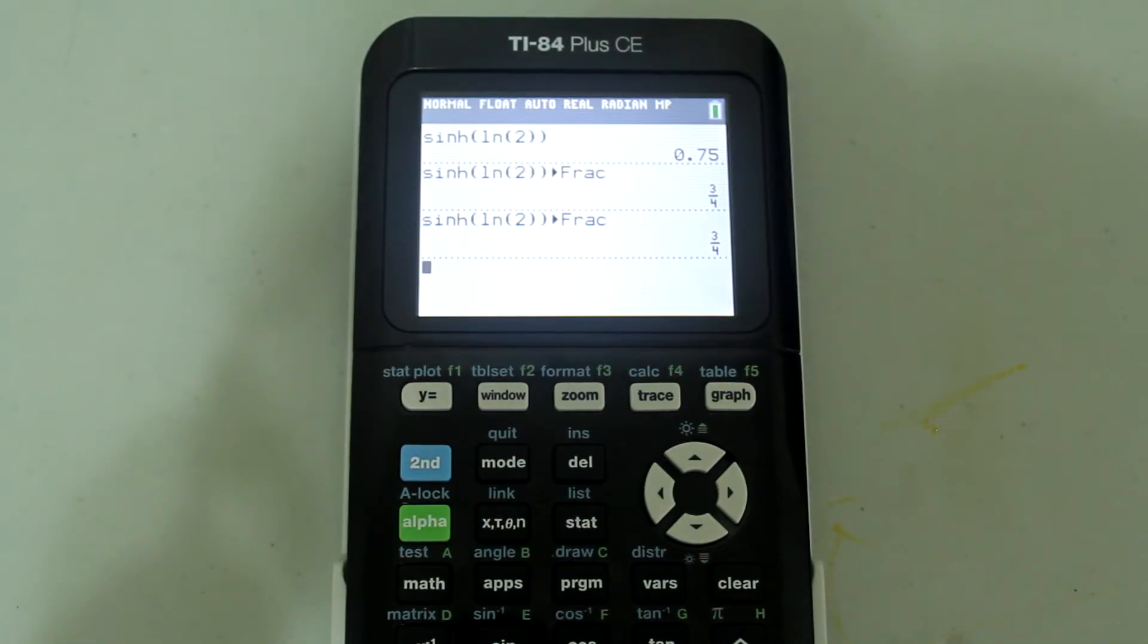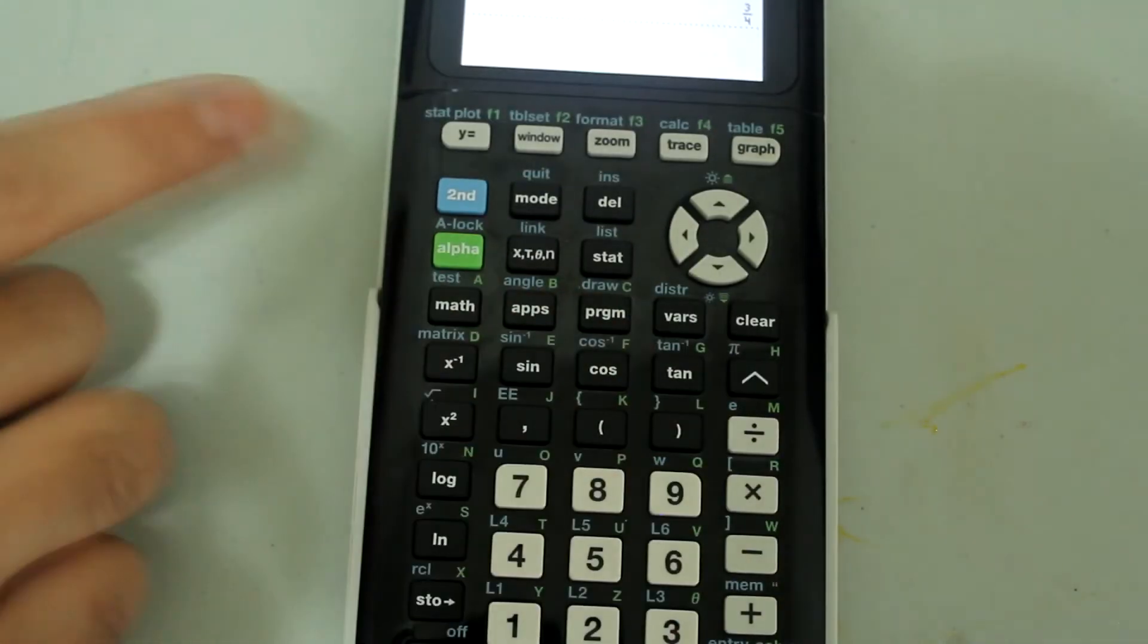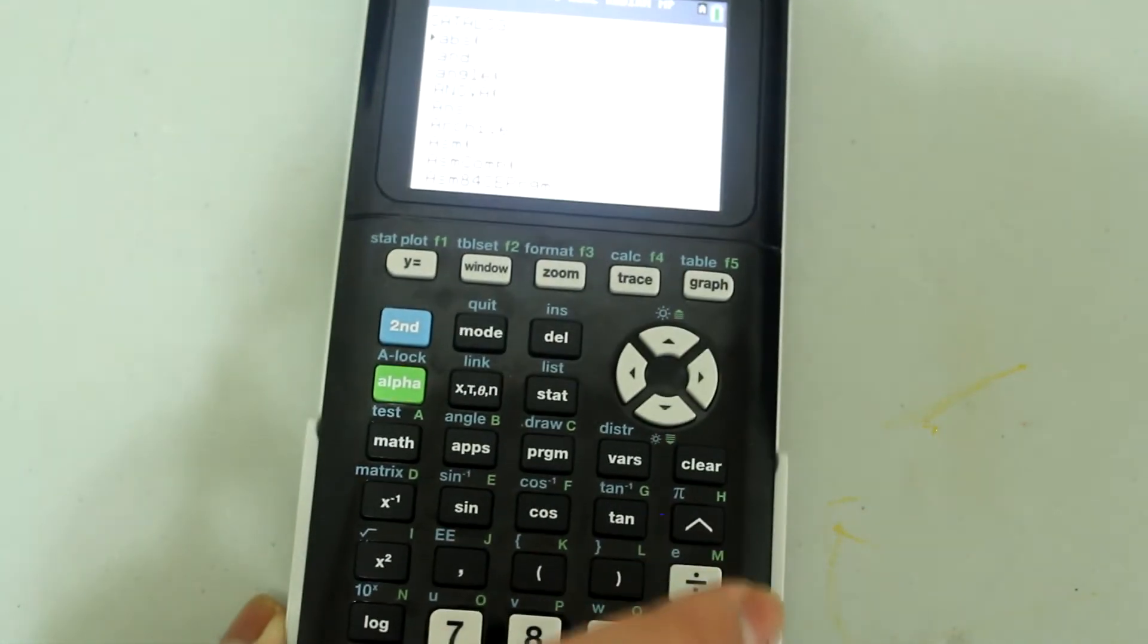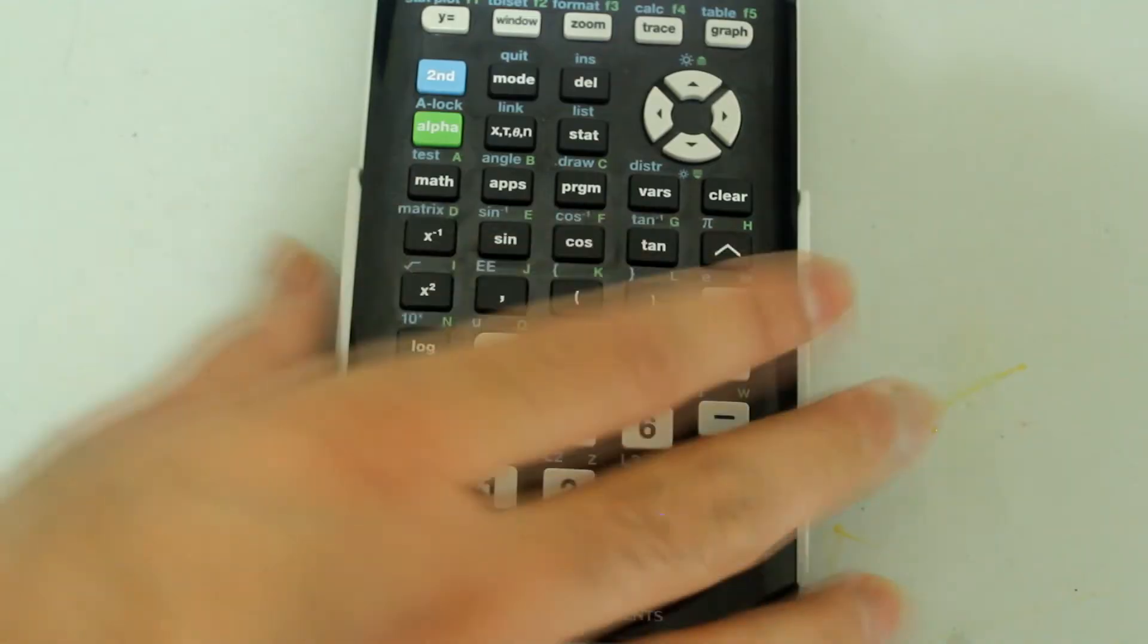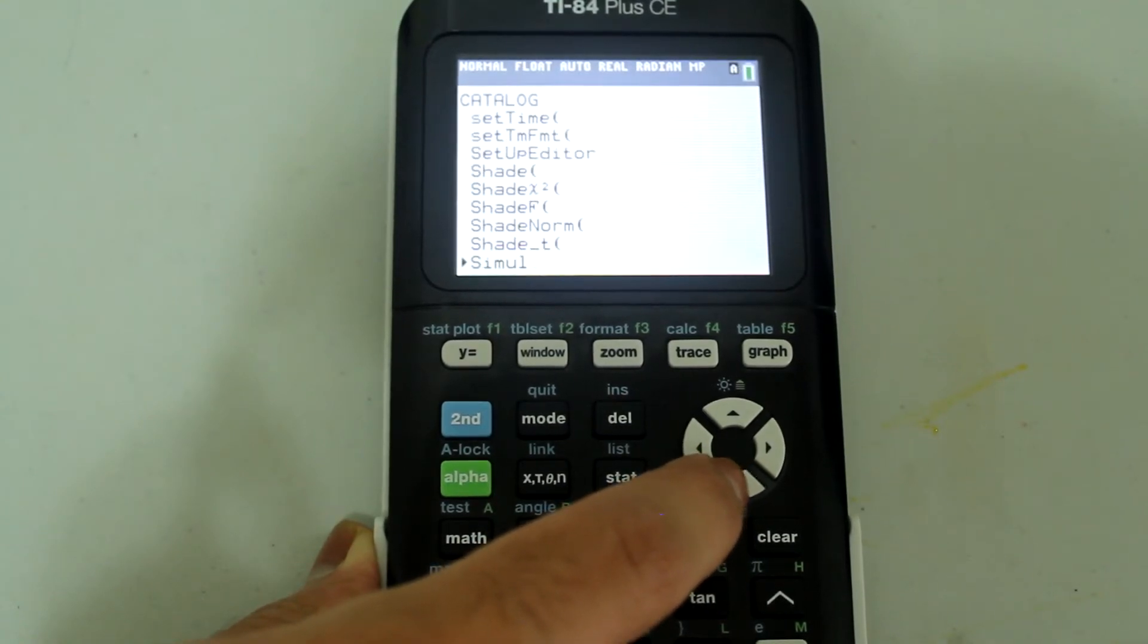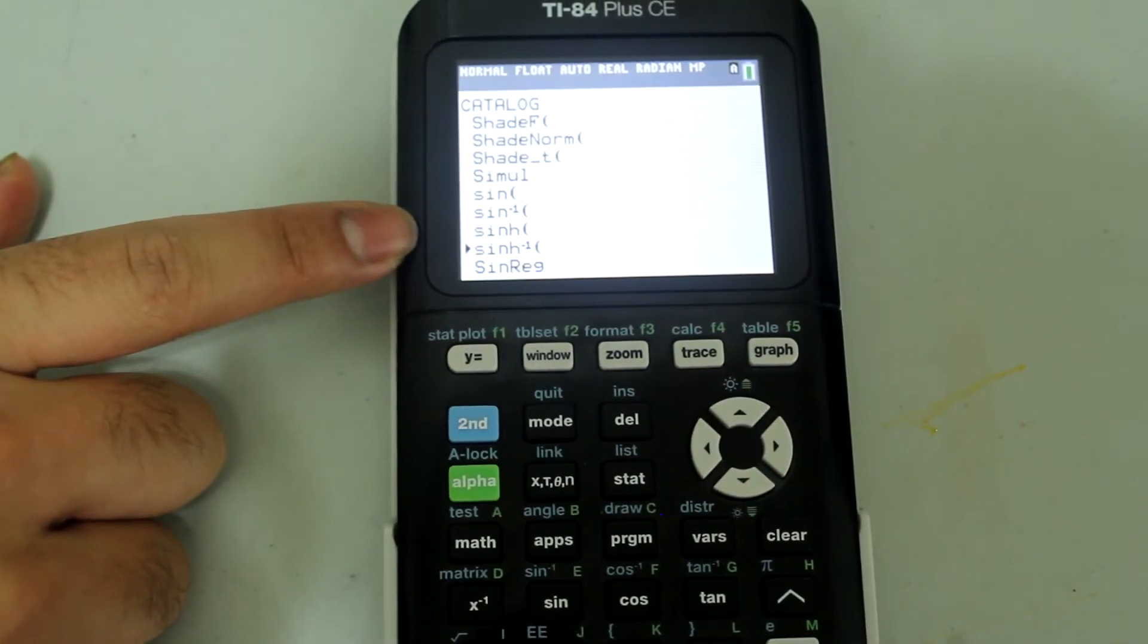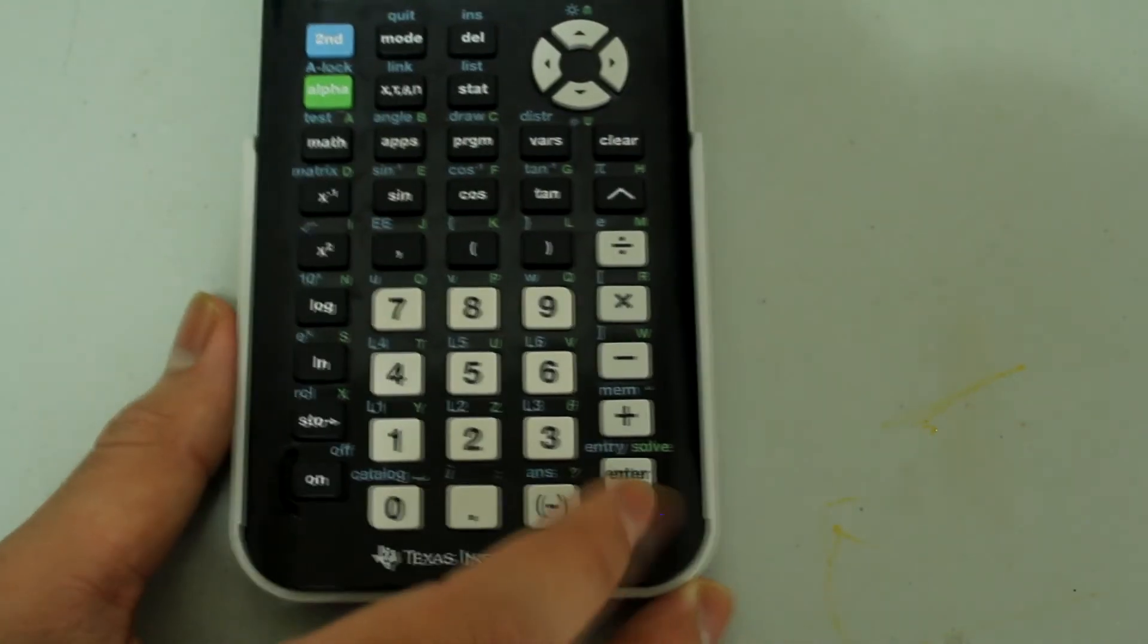Now let's do inverse sinh of 0.75. Once again, I'm going to go to the catalog. Press 2nd and then 0 to go to the catalog. This time I'm also going to press the natural log button for S to find inverse sinh. Arrow down until I find inverse sinh, which is here, and press Enter.